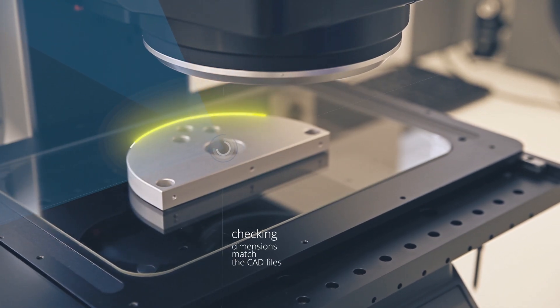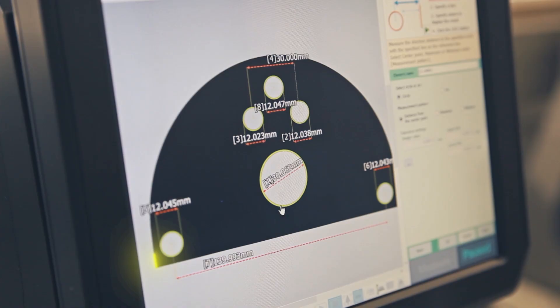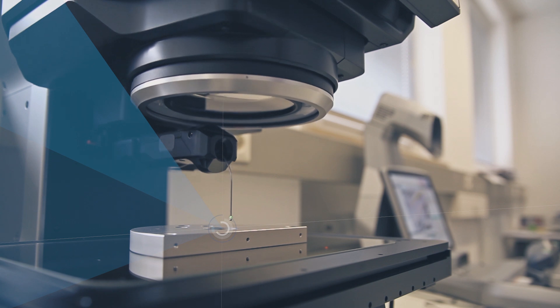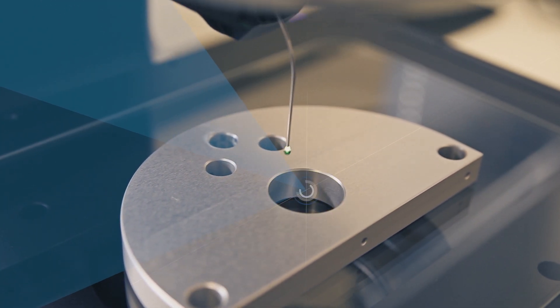Stage 2 consists of an automated 2D measurement. We check that the dimensions of the parts match the CAD file and any drawings using contrast detection and mechanical probes.